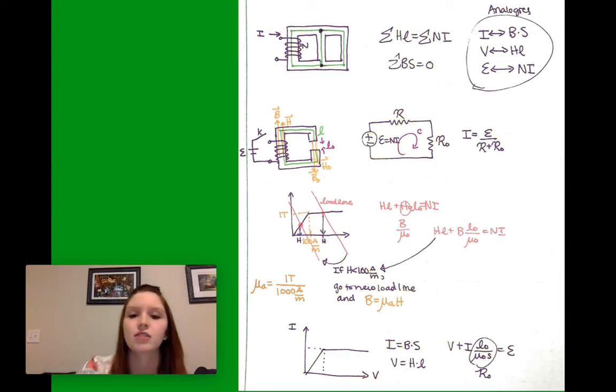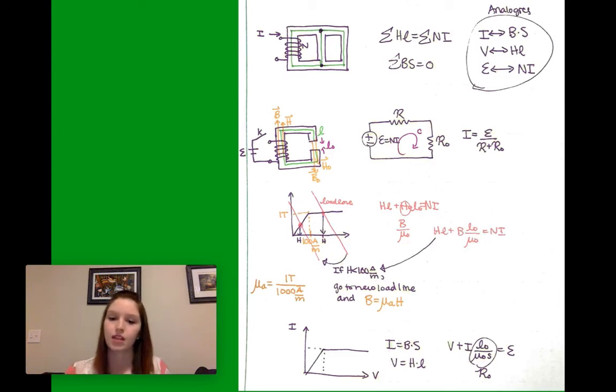And we check this load line, and we use this equation to see if our H makes sense, if it's greater than 100 amps or 1,000 amps per meter, depending on whatever your amps per meter is. And if it's not, you're going to use this other load line using mu of A, which is B of m over H of m, or H of k. And then you can create a new I versus V function using those same analogies that we used above.